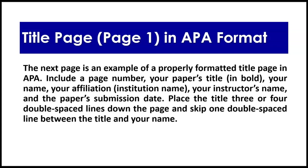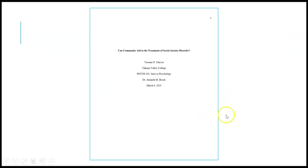Let's look at the title page, which is page one of your APA paper. A properly formatted title page should always include a page number, your paper's title in bold, your name, your affiliation or institution name like YVC, your instructor's name, and the paper's submission date. Place the title three or four double-spaced lines down the page, and skip one double-spaced line between the title and your name. For example: student Yesenia X. Chavez, title 'Can Community Aid in the Treatment of Social Anxiety Disorder?', written for Psych 101: Intro to Psychology at Yakima Valley College, Dr. Amanda M. Bosk, submitted March 6, 2021.